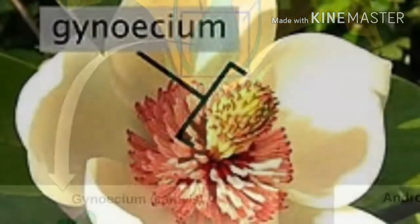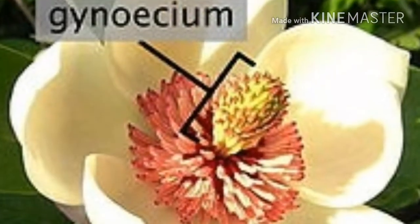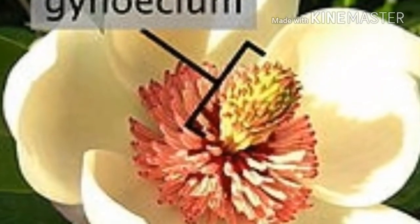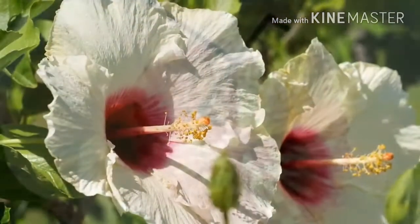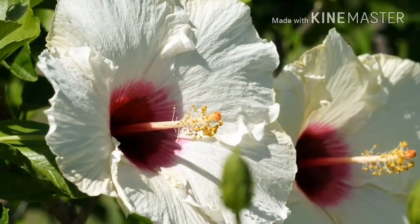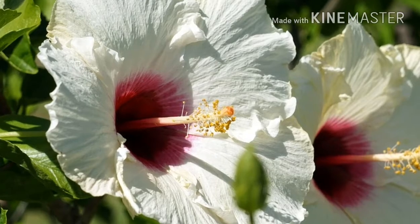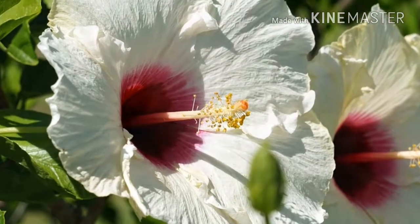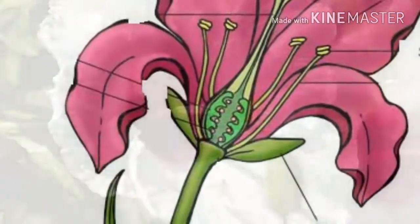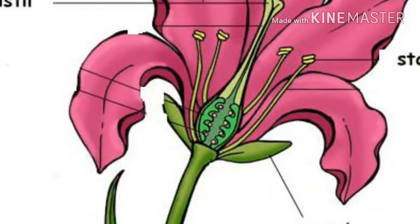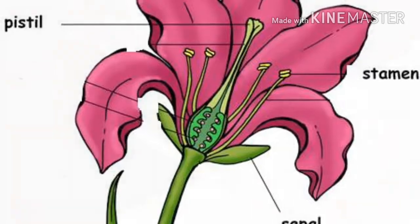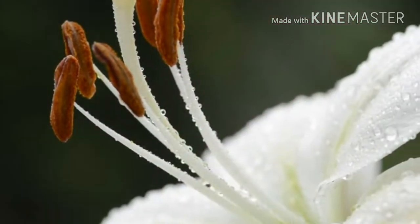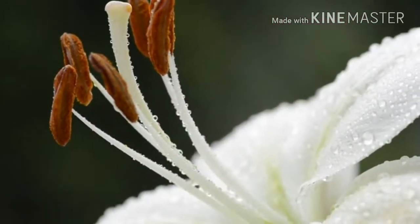Now let's talk about the carpel, which is the female part of the flower. The carpel represents the female reproductive part. As you can see, it has a stigma, style, and ovary, which are collectively known as the pistil.